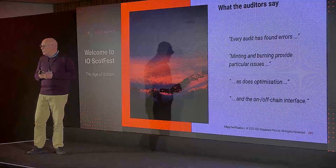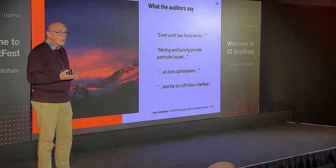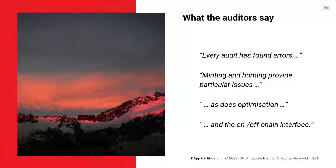What sort of things do we hear from auditors? First, perhaps not surprisingly, every audit finds errors. More specifically, minting and burning are particular areas where audits find subtle but really quite devastating errors. If you're using a token as a representation of ownership and you can replicate that token, your protocol will probably go wrong. Another place that people attack is optimization: you have working code, you say 'I'll just tweak it a bit, this will be faster' — yes, it's faster because it doesn't do what it was meant to do.